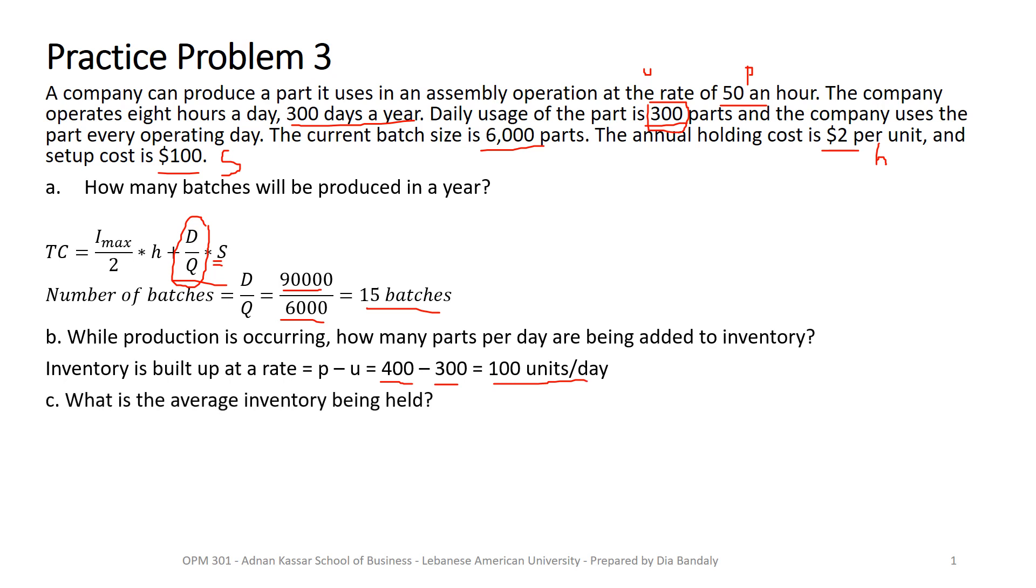Part C, what's the average inventory being held? You can also go back to your total costs equation, that says it's equal to I max over 2 times H. Why we are multiplying H by that? Because this is our average inventory. So your average inventory is I max over 2. So we need to find I max.